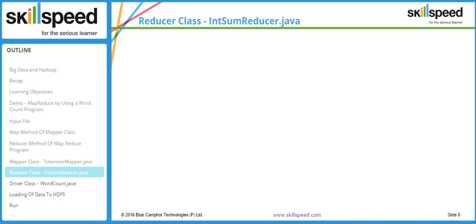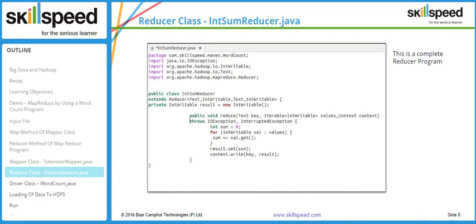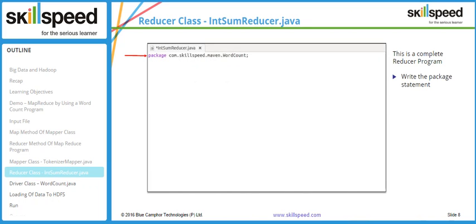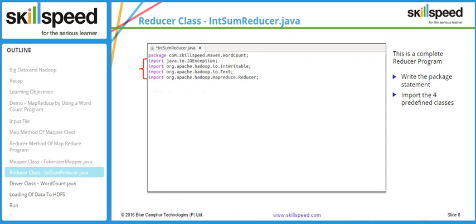In the same package we create the reducer class. Arrow number one is the package statement and arrow number two shows four predefined imports: IOException, IntWritable, Text, and the Reducer class.